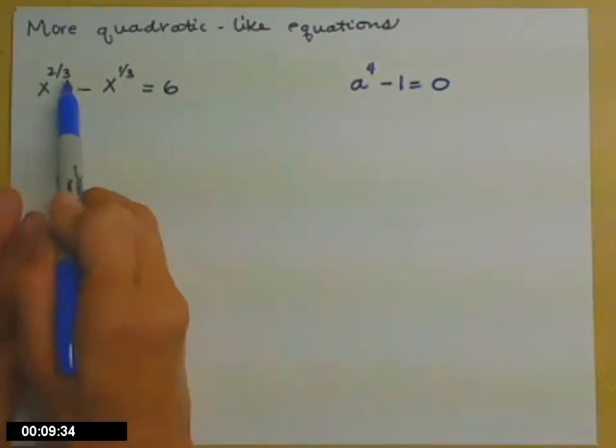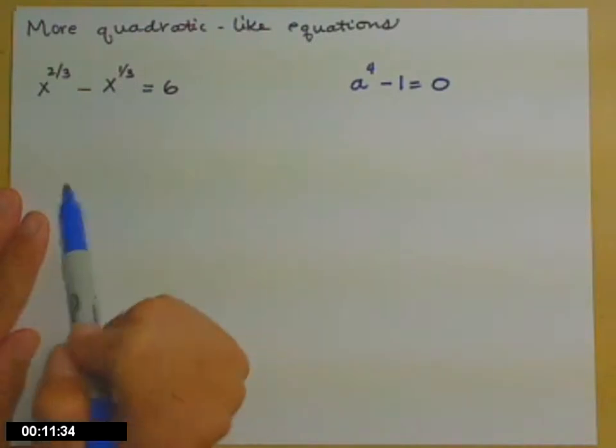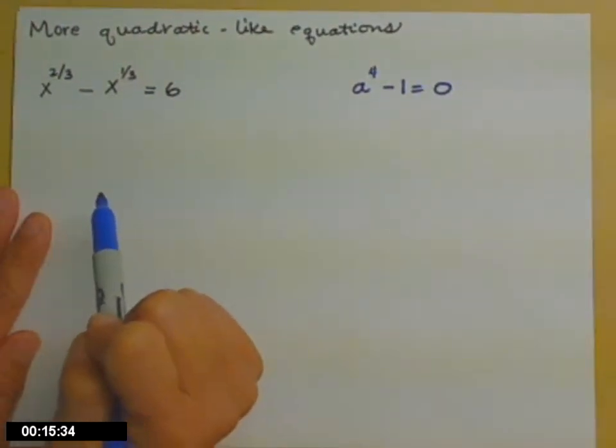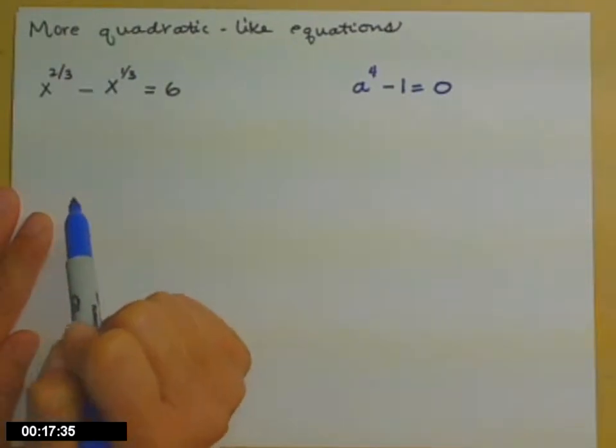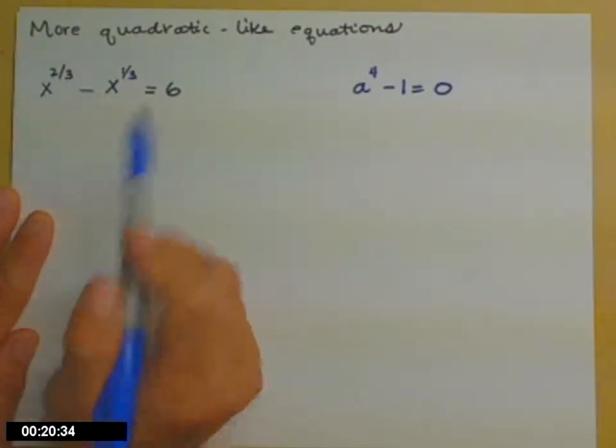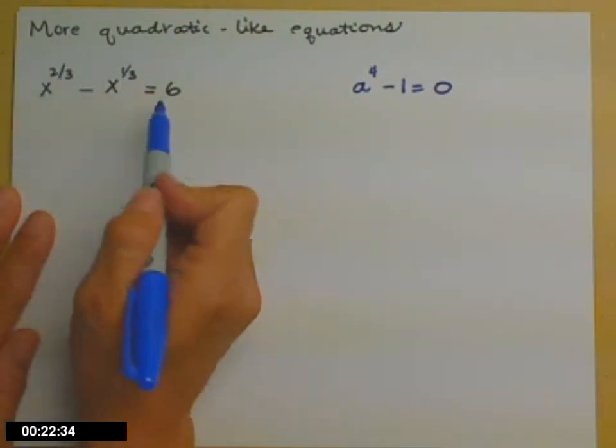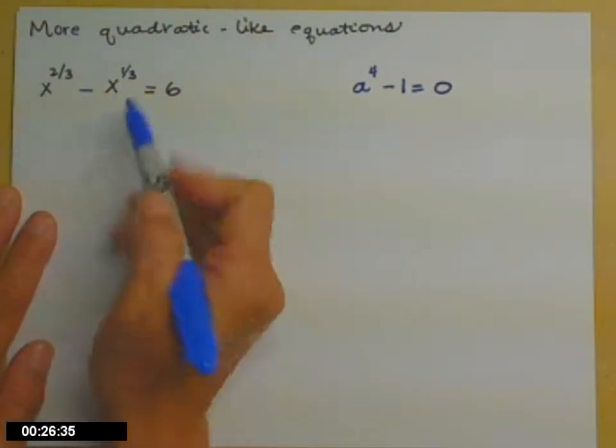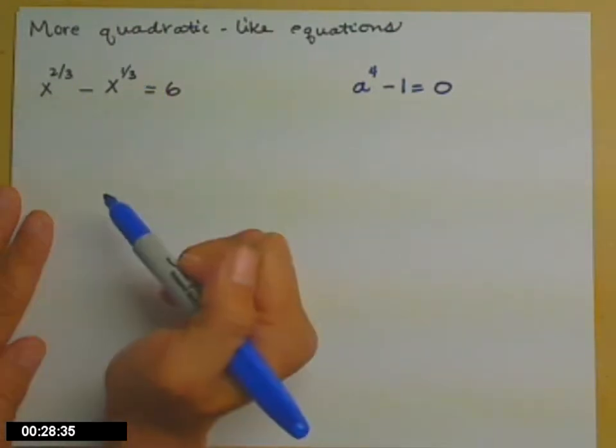So in the first one, I have x to the two-thirds minus x to the one-third equals six. It might not feel quadratic-like to you yet, but I promise it's there. Two terms with a variable in it, and their exponents have that property, that if you multiply one of the powers by two, you get the other one. Two times one-third gets us the two-thirds.